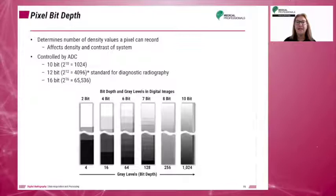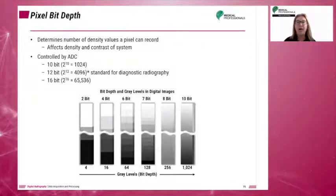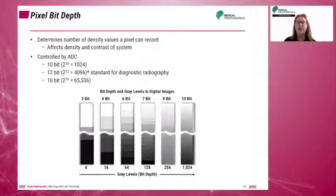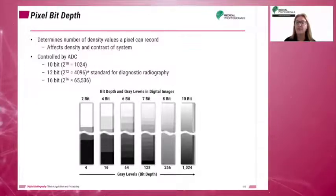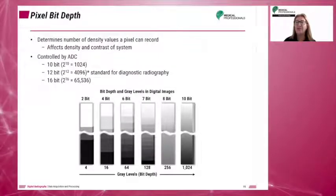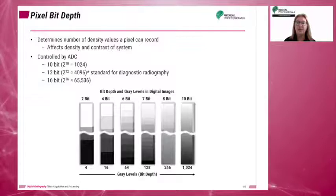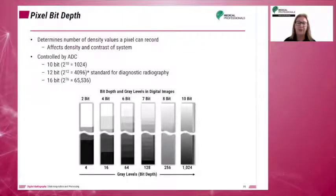Computers operate on a binary language, which is a two-symbol alphabet. Therefore, bit depth is expressed as 2 to the power of n, where n represents the number of bits. Pixel bit depth determines the accuracy of digitization of the analog signal. The higher the bit depth, the more shades of gray the pixels in the matrix are capable of displaying.